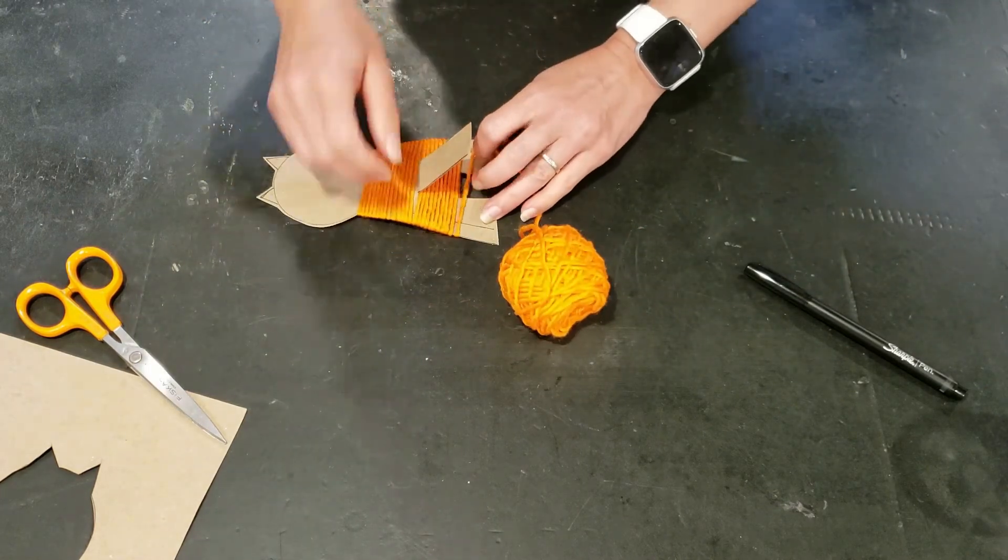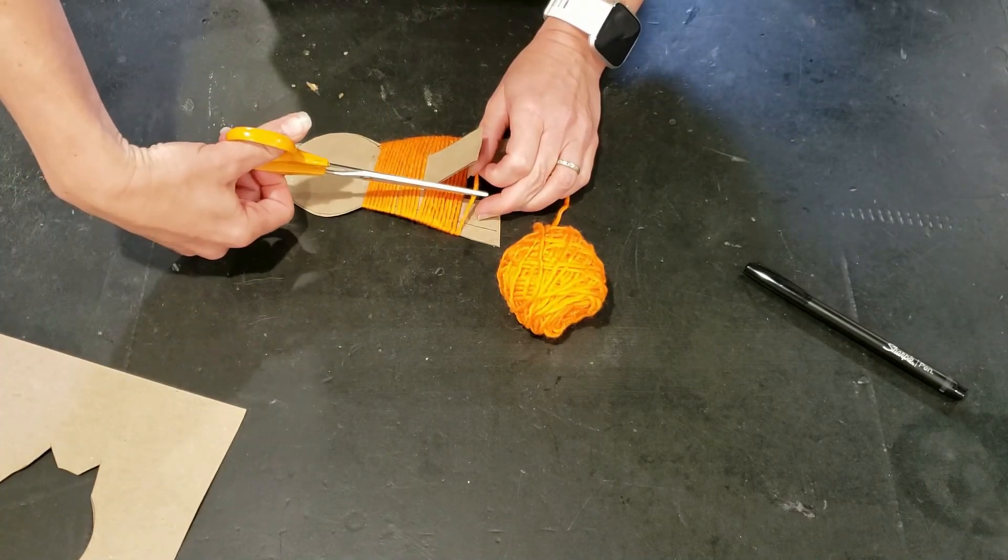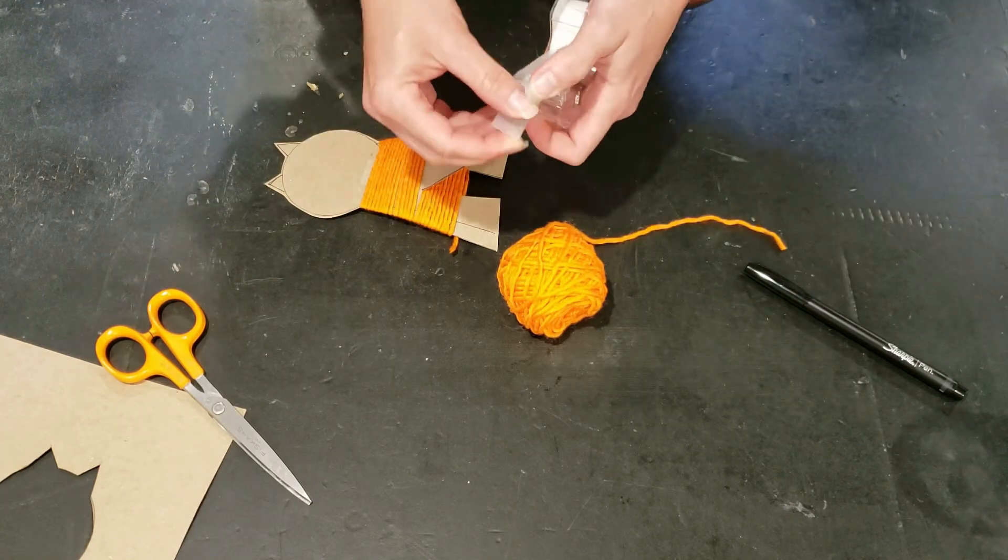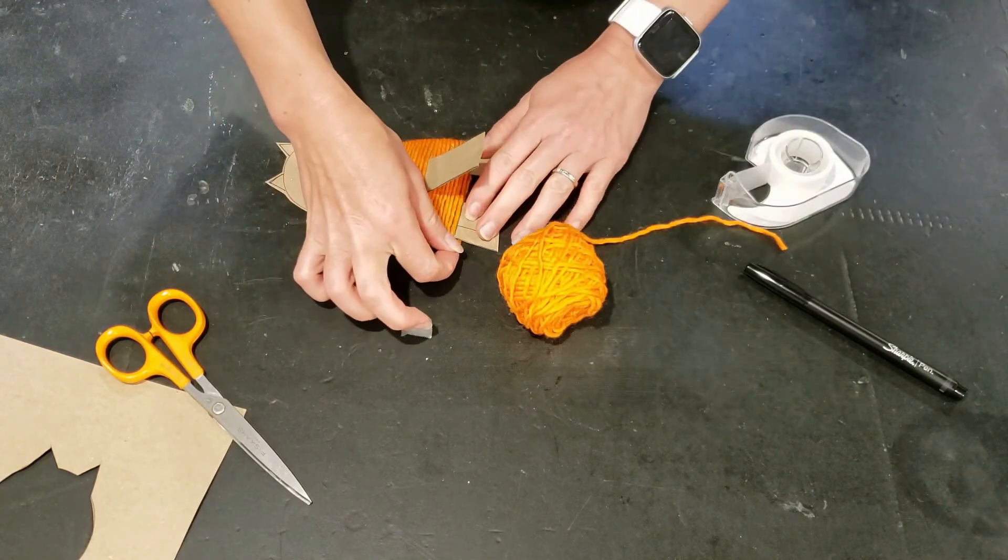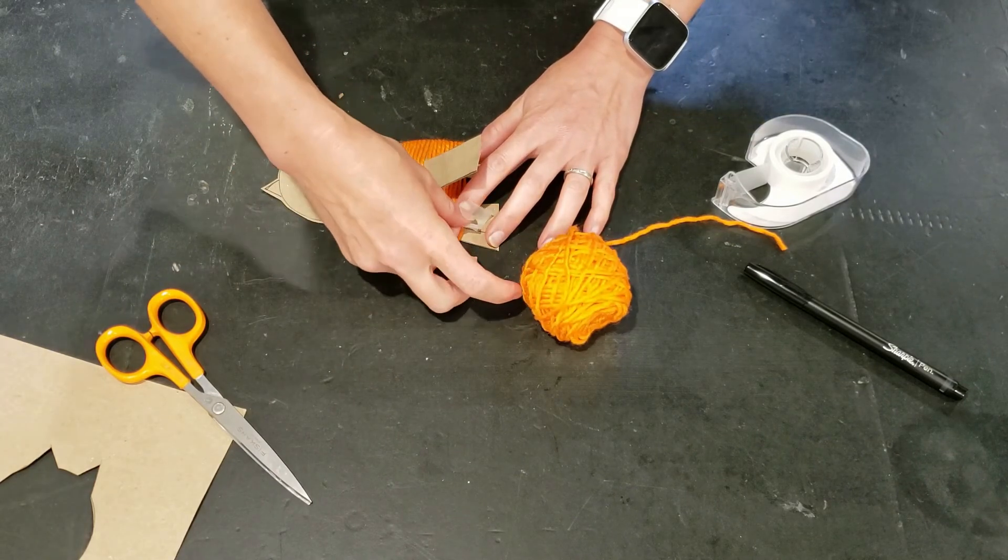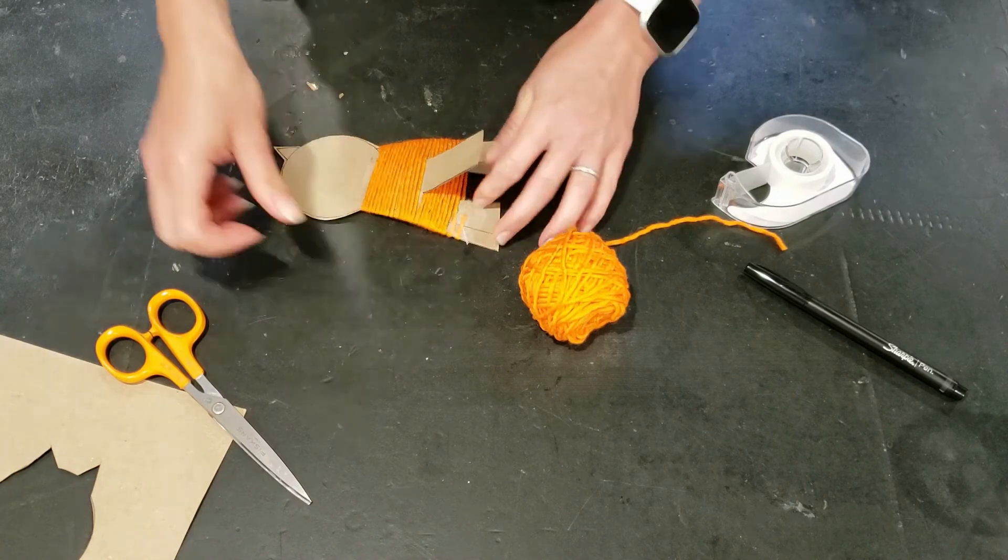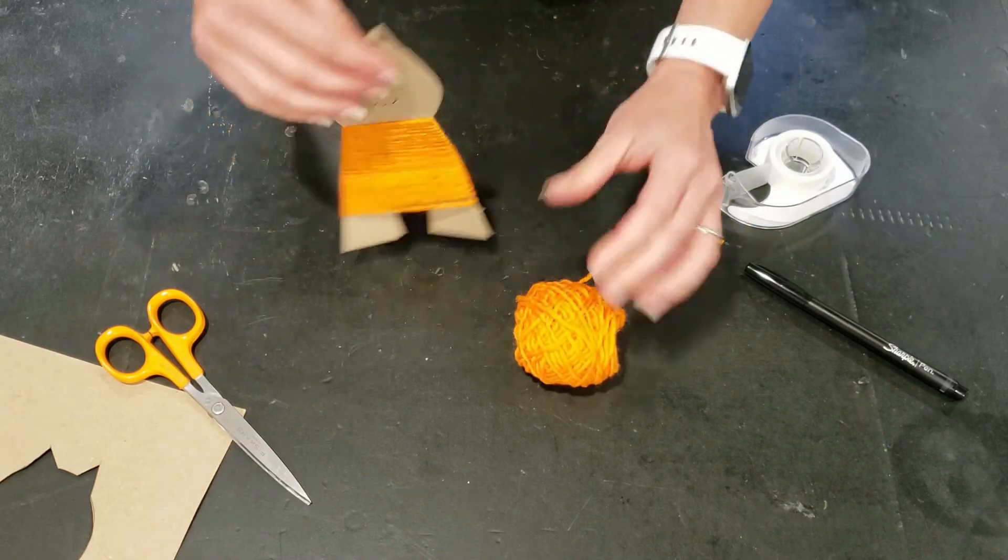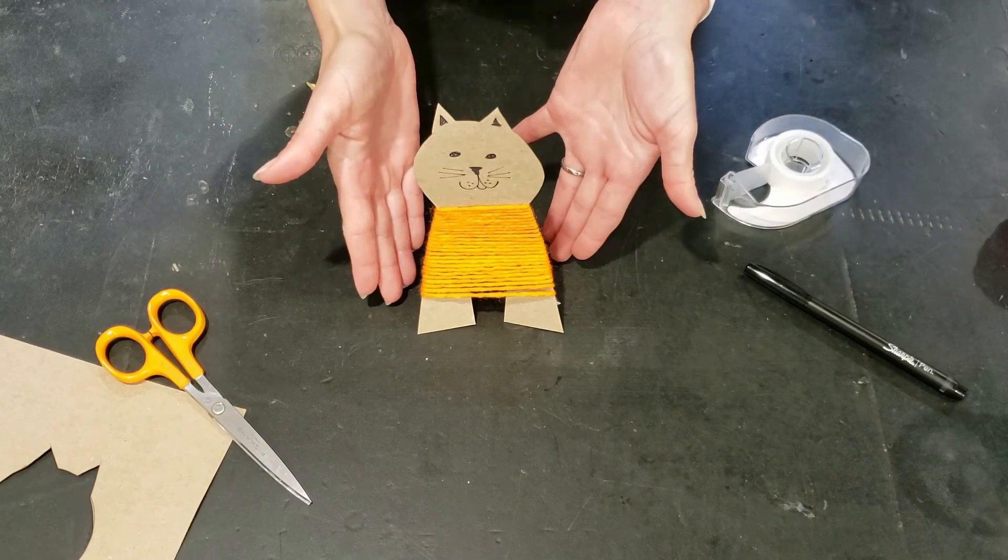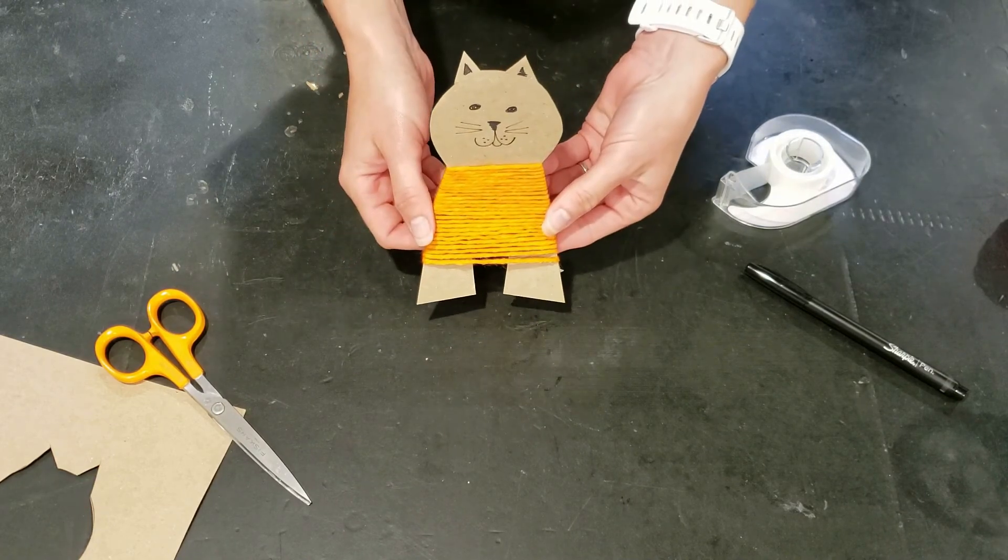Then we're just going to tape it in place behind its leg to finish it off. Go ahead and just tape it to the back of one of the legs once you have your sweater as far down as you would like it or your kitten would like it. And there you have it. There is your little sweater kitten. How cute. And your parents can't complain about feeding this one. Zero maintenance.